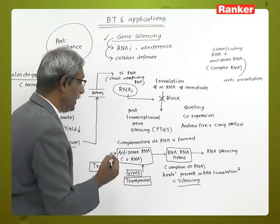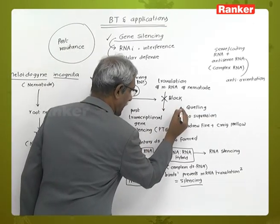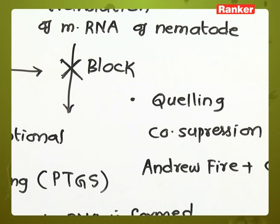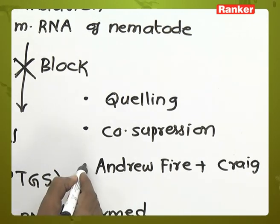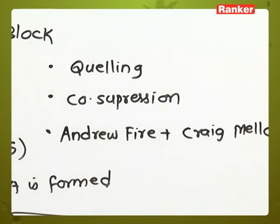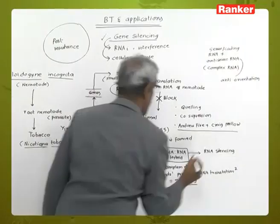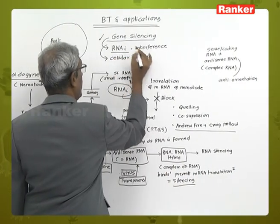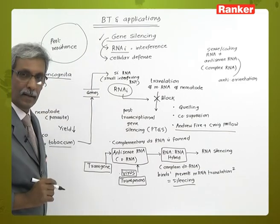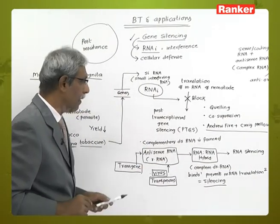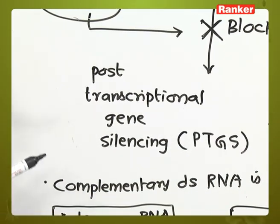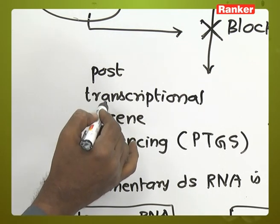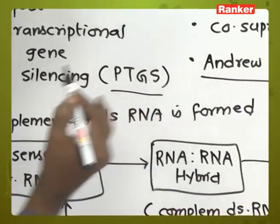This process of blocking or interference is termed as quelling, also termed as co-suppression. It has been studied by Andrew Fire and Craig Mello, who are associated with RNAi or gene silencing. This is a method of post-transcriptional gene silencing, termed as PTGS — occurring after transcription, during the process of translation.